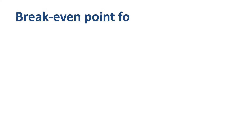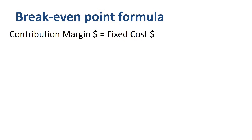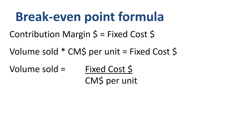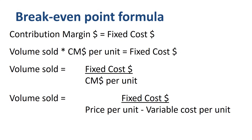Let's do the exact same break-even analysis, but in formulas. The break-even point is the sales volume where contribution margin dollars equals fixed cost dollars. That's the same as saying that the volume sold times the contribution margin per unit equals the fixed cost dollars. And that's the same as saying that the volume sold to break even equals the fixed cost dollars divided by the contribution margin per unit — or equivalently, divided by the selling price per unit minus the variable cost per unit.